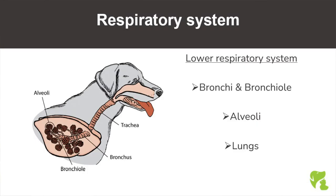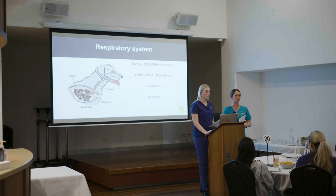Moving to the lower respiratory system: the trachea goes down into the bronchi, bronchioles, and alveoli. The alveoli are tree-like structures and are the last part of the lower respiratory system. This is where gaseous exchange takes place — where oxygen and carbon dioxide are exchanged and distributed amongst the tissues.